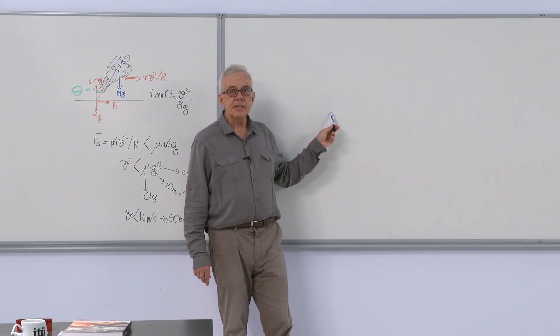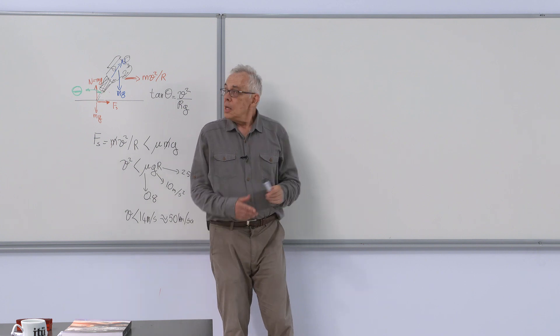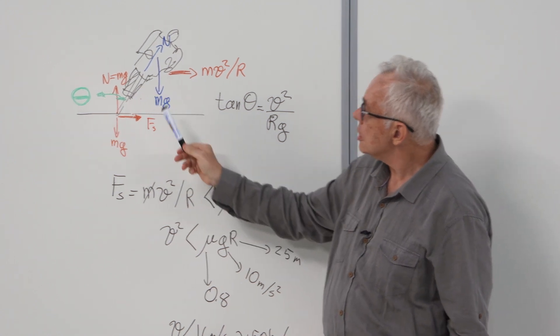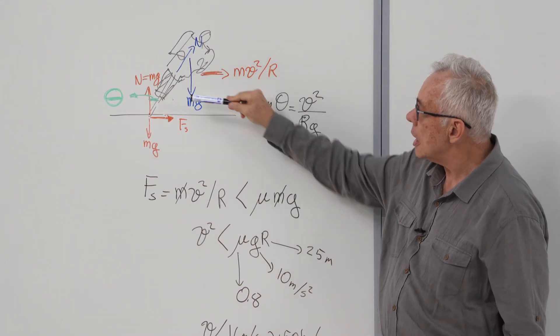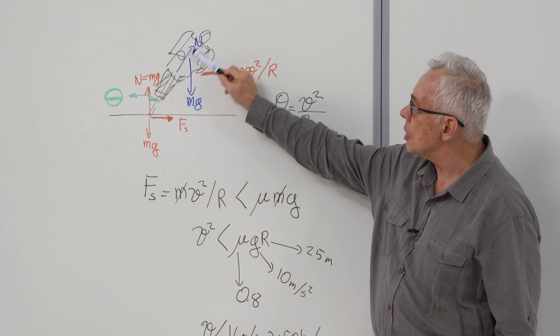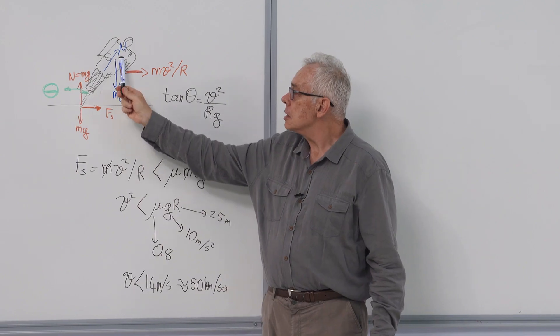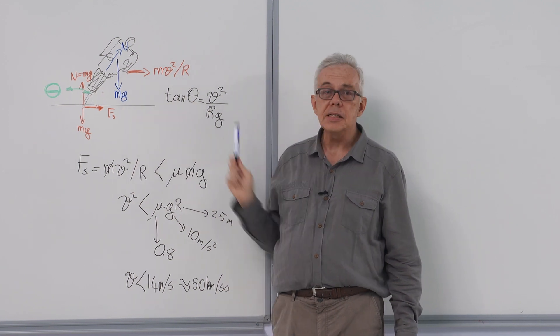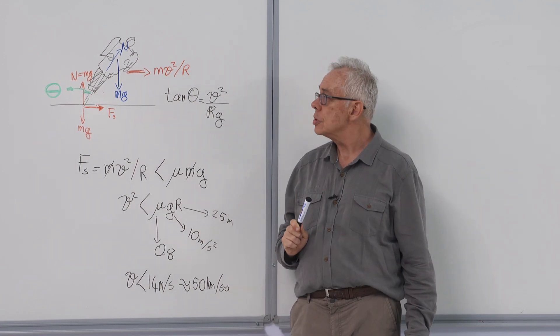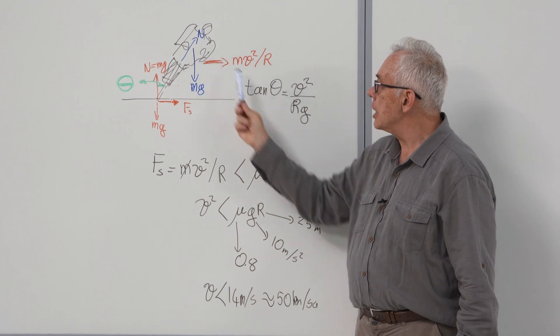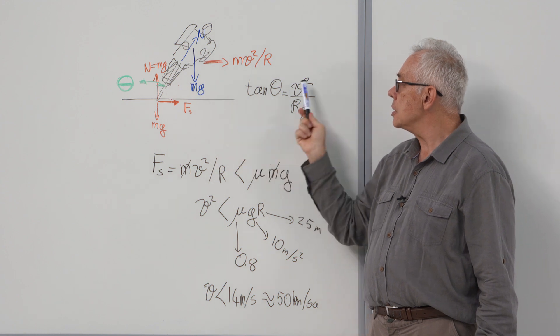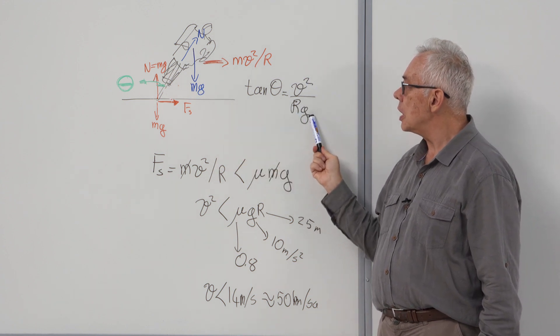A similar situation exists for this cyclist taking a curve. Again, our schema is, here is our cyclist. The forces on him are gravity mg and the normal force due to the seat. The resultant of these two is the mv squared over r, the centripetal force. Now, again, tangent theta is banked. So the tangent theta is v squared over rg.